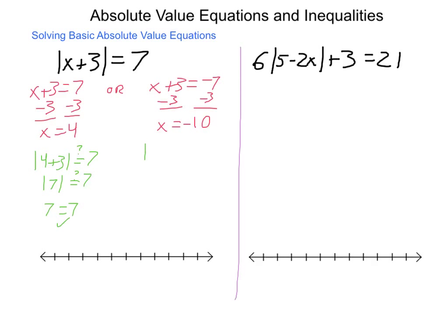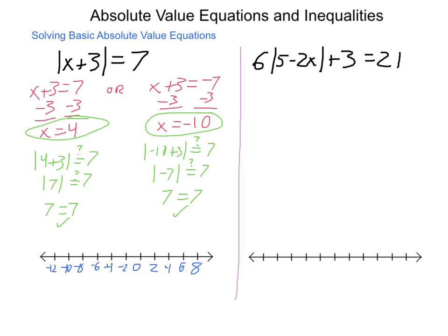Right-hand side: the absolute value of negative 10 plus 3 is supposed to equal 7. Negative 10 plus 3 is negative 7, and the absolute value of negative 7 is 7 — it's 7 units to the left of zero — so that equals 7 and checks out. We need to graph these two points — x equals 4 and x equals negative 10 — on our number line. Plotting the points, we put a point at 4 and a point at negative 10. It is just those two individual points — not what's to the left, right, or in between.